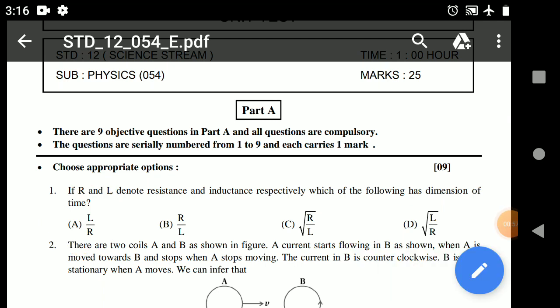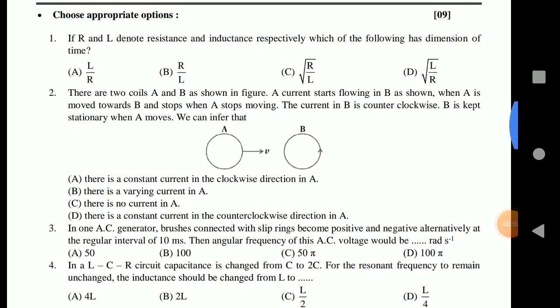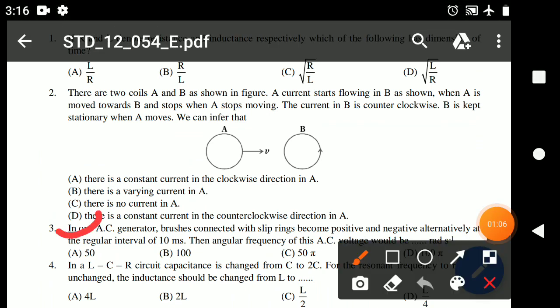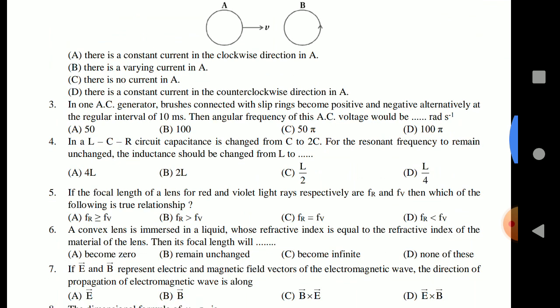Question 2: There are two coils. Here I will directly show you the answer. The answer is option D. There is a constant current in counter clockwise direction.